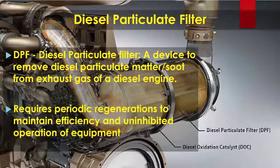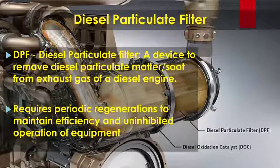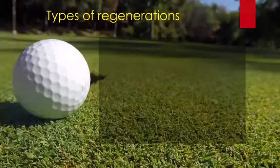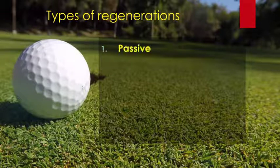To keep the DPF operating at peak efficiency, it requires periodic regenerations to be performed. Some of these regenerations happen during normal use and require no intervention. As the soot level in the DPF begins to become more severe, it requires more rigorous regeneration processes to be performed by the ECU. Regeneration is a process of increased exhaust temperatures to oxidize the accumulated particulate matter, or soot, from the walls of the DPF. There are five types of regenerations that can occur.